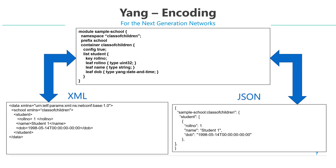The final topic of this video is encoding. Yang modules can be encoded in different formats. The Yang 1.1 RFC, which is 7950, restricts its scope to the XML format. XML is the format used for the NetConf management protocol. However, the RestConf protocol, which is another network management protocol that exists, supports both XML and JSON forms of encoding. So depending on the management protocol used, the choice of encoding can be done.